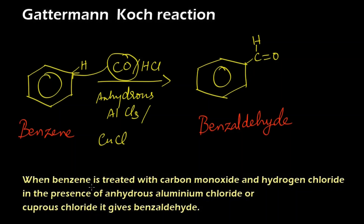To summarize: benzene treated with carbon monoxide and hydrogen chloride in the presence of anhydrous aluminium chloride or cuprous chloride gives benzaldehyde. This reaction is also known as the Gattermann-Koch reaction.